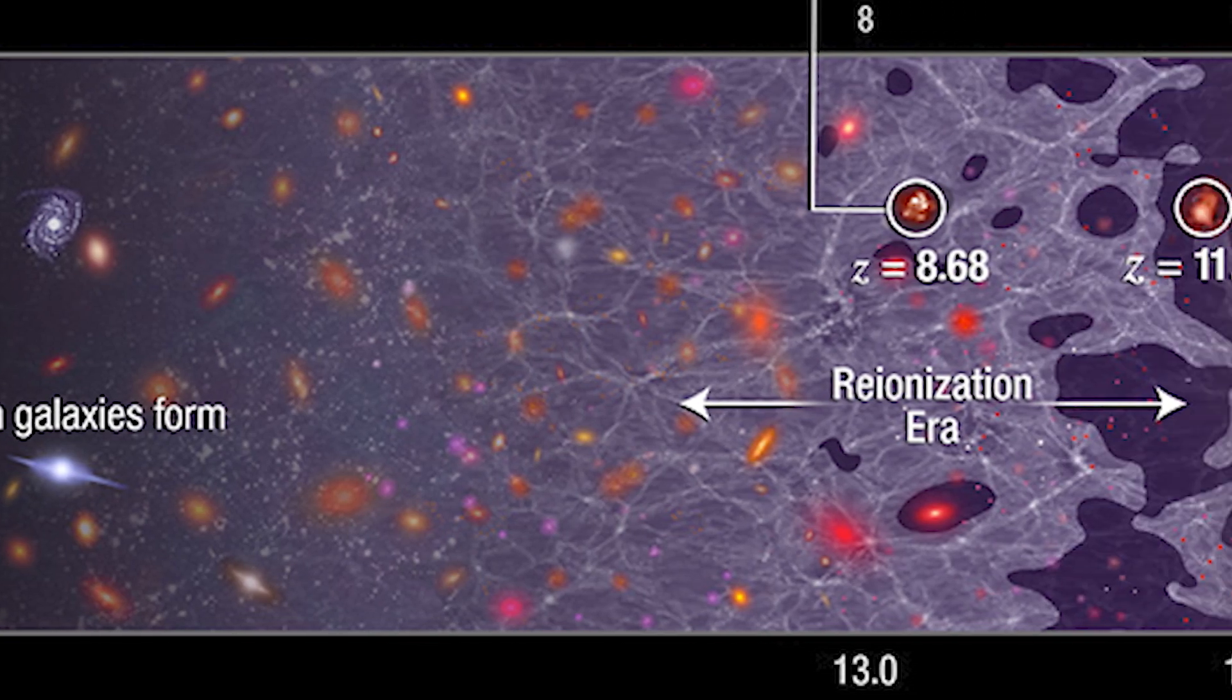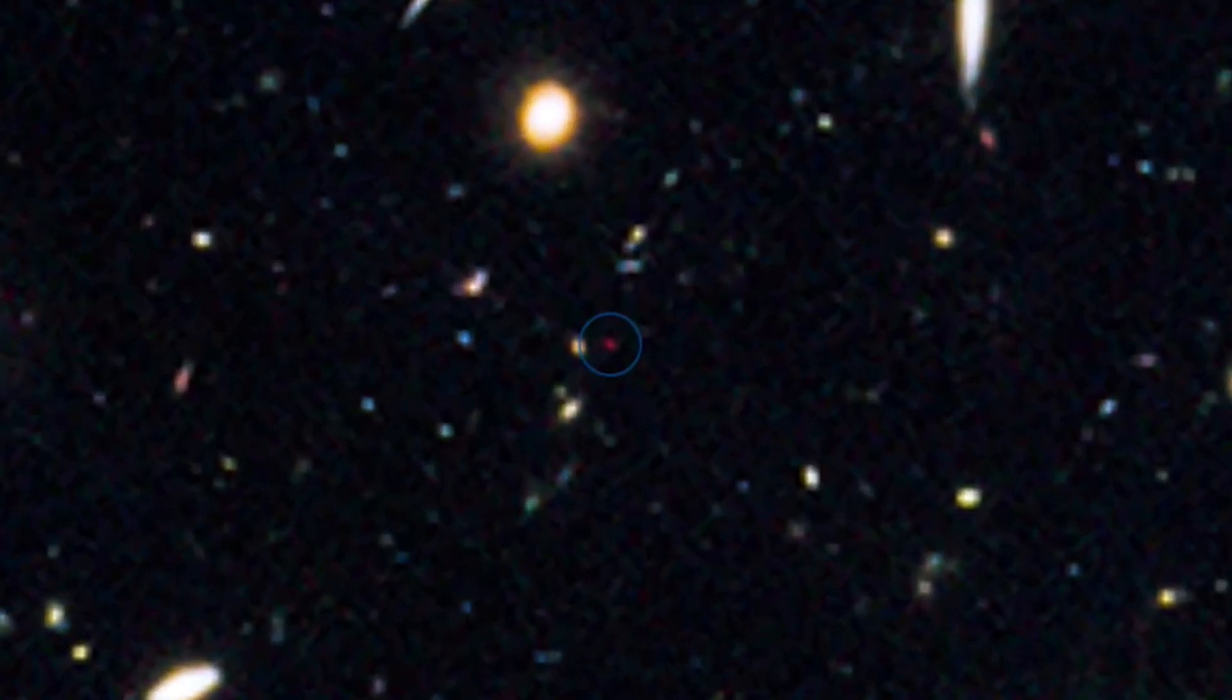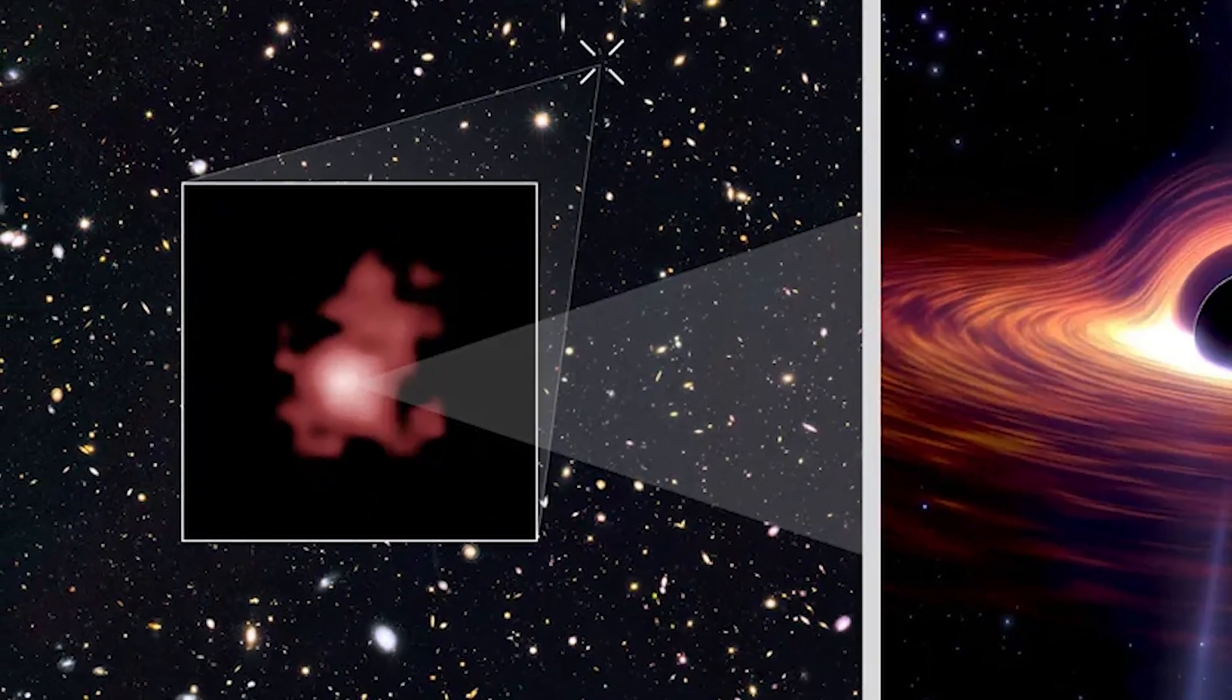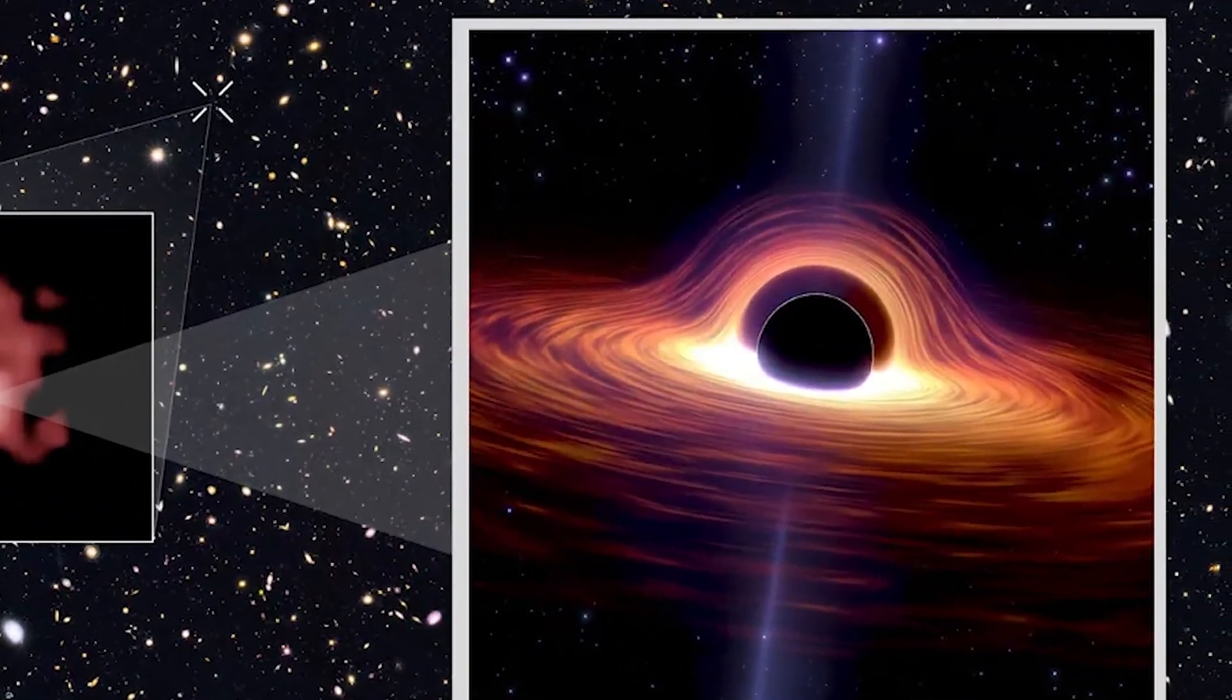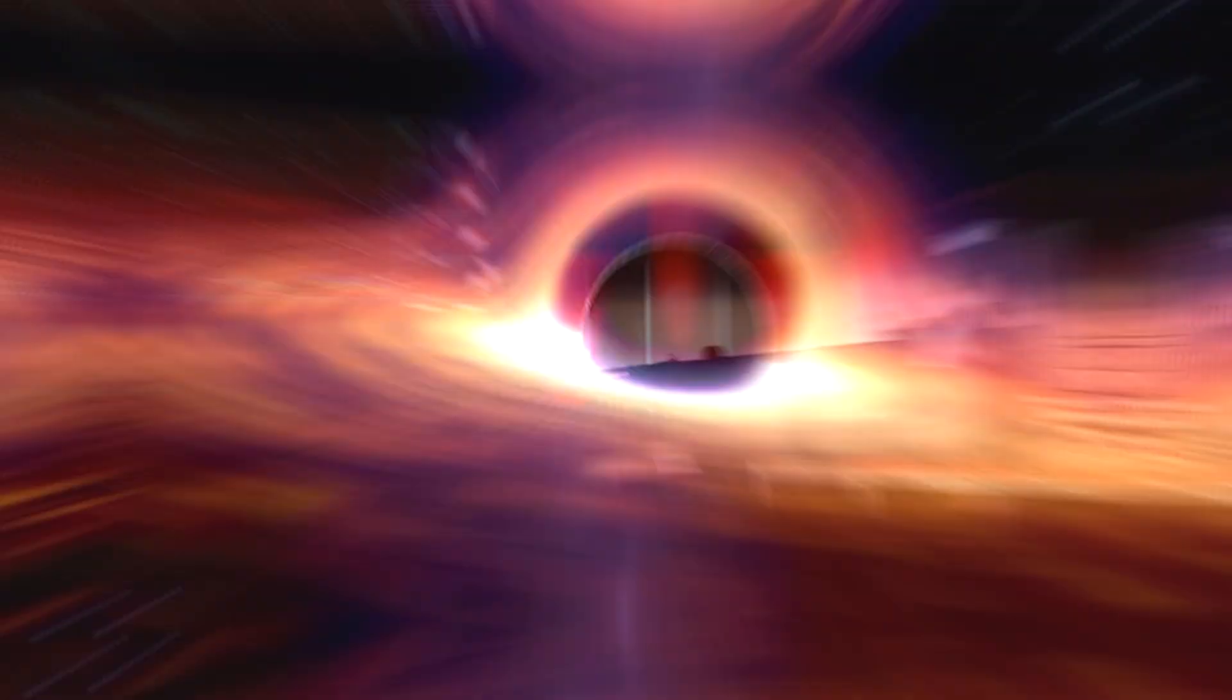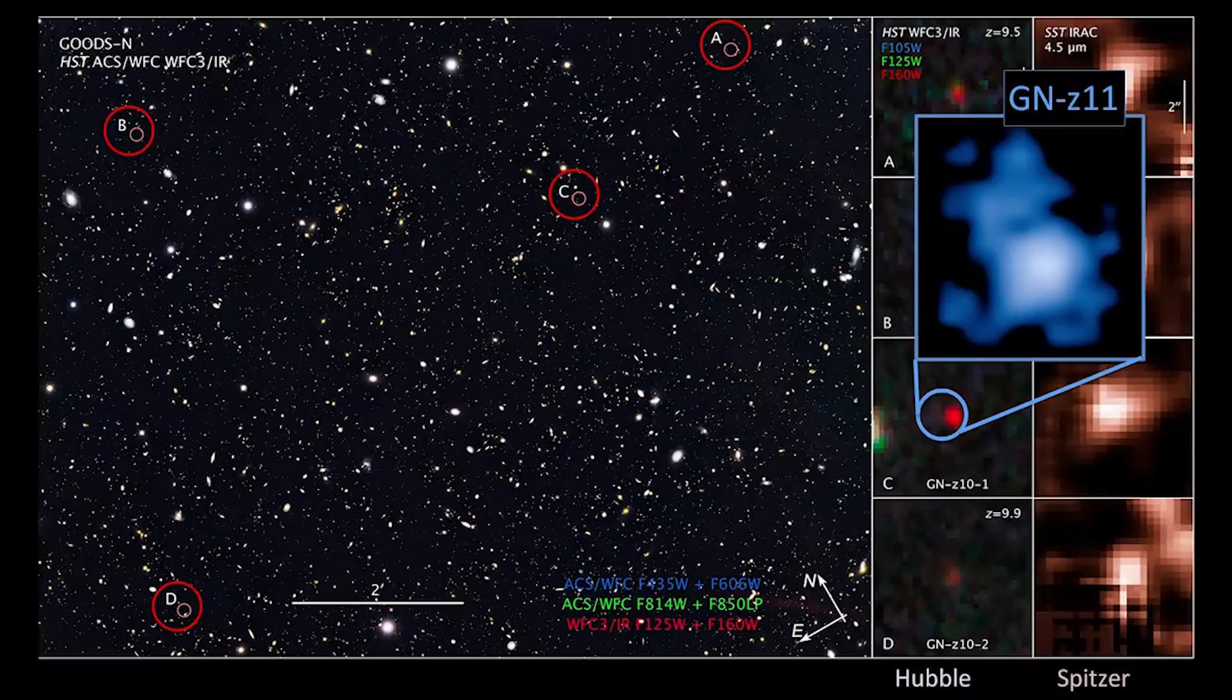What makes GNZ-11 particularly intriguing is not just its immense distance, but also its unique characteristics. Despite its youth in cosmic terms, GNZ-11 shines brightly and boasts significant size. When we observe GNZ-11, only around 400 million years have passed since the Big Bang.